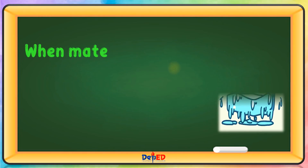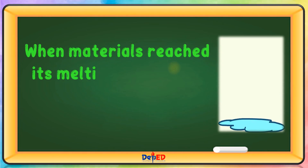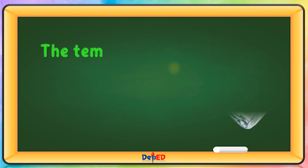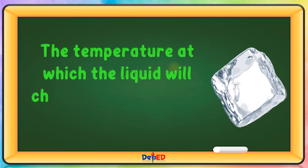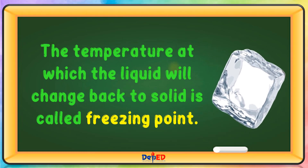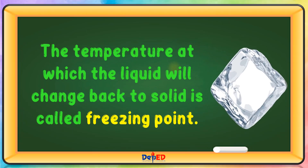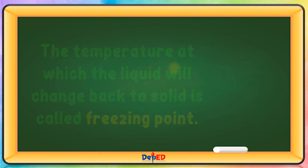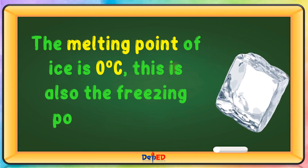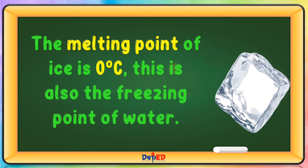When materials reach their melting point, solid materials change into liquid. The temperature at which liquid changes back to solid is called the freezing point. The melting point of ice is zero degrees Celsius, which is also the freezing point of water.